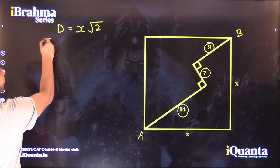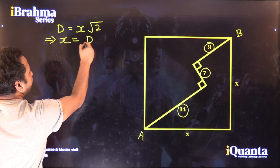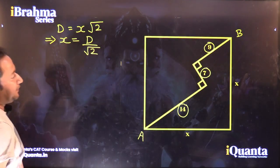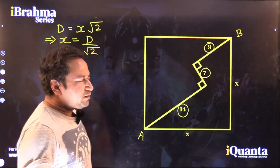Or I can say that side is equal to diagonal divided by root 2 and this is what we have to actually find. So now going back to what I said earlier,